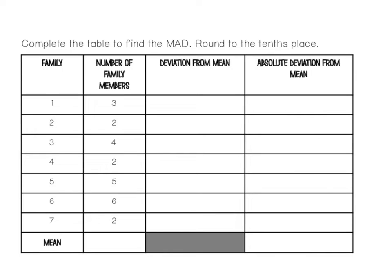We're going to go ahead and calculate the MAD value for this table. The first column tells us how many families were surveyed — seven families were surveyed. The second column tells us the number of family members, and we're going to find the average number of members in each family. When you add all of these up you should get 24, and we divide it by seven, which gives us 3.4.